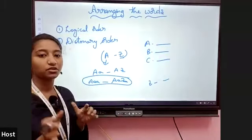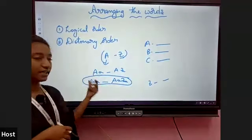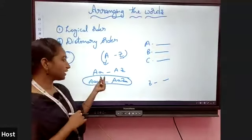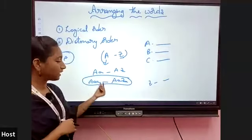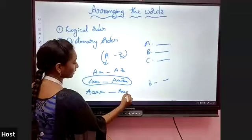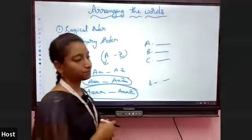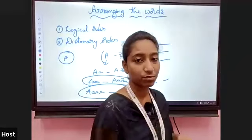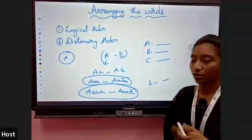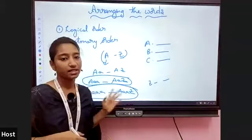Once you observe the dictionary, you can clearly see that the words are arranged from A to Z. The words under A are also arranged in order within A itself. So in this way, all words are arranged in dictionary order. Both logical order and dictionary order are very easy topics — you can easily score marks in this topic.